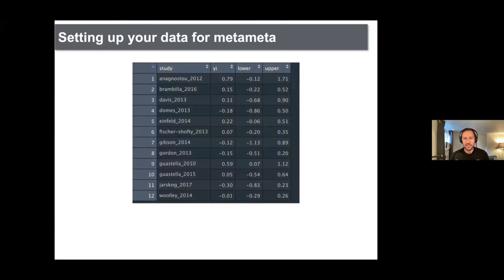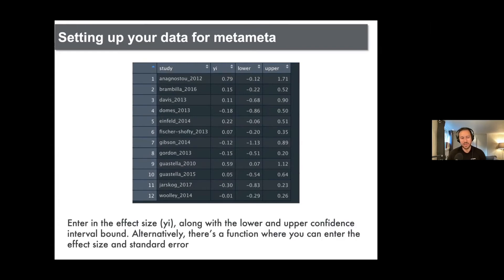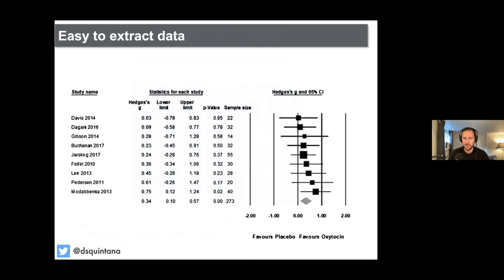This brings us to how we actually do our analysis within MetaMeta. Say we have a series of studies and a series of effect sizes in the YI column. There are two main ways to enter your data. The first way is by entering your effect sizes for each study along with your lower and upper confidence interval. This is commonly reported in meta-analyses — you have your effect size and your upper and lower limits — so all you have to do is extract these values from a reported meta-analysis.